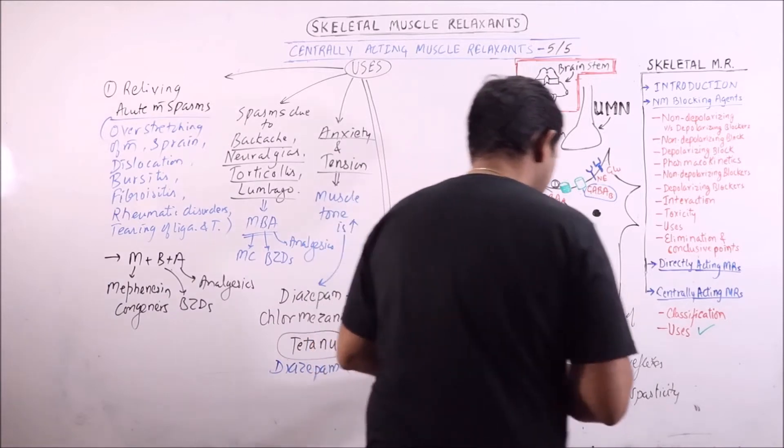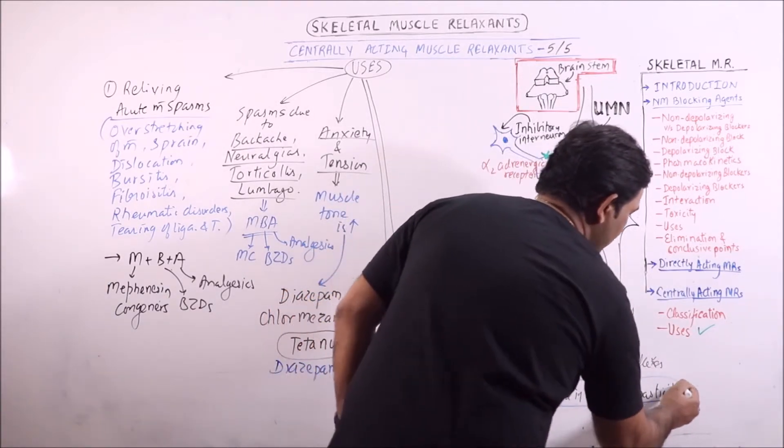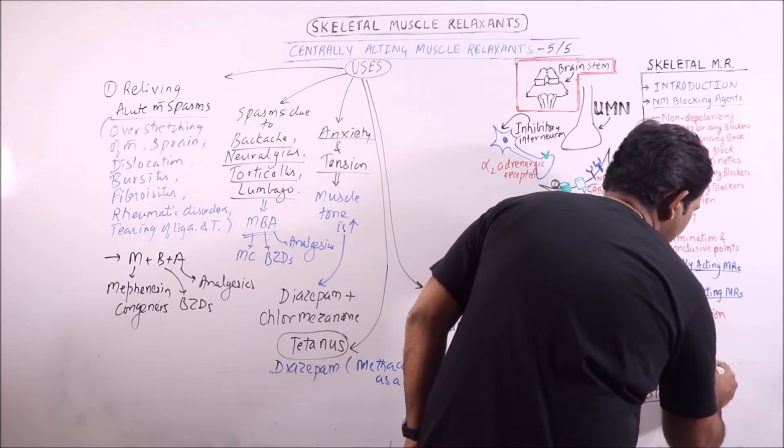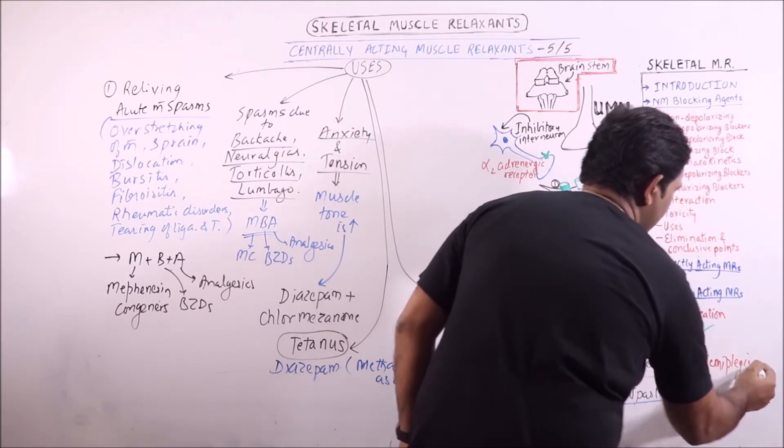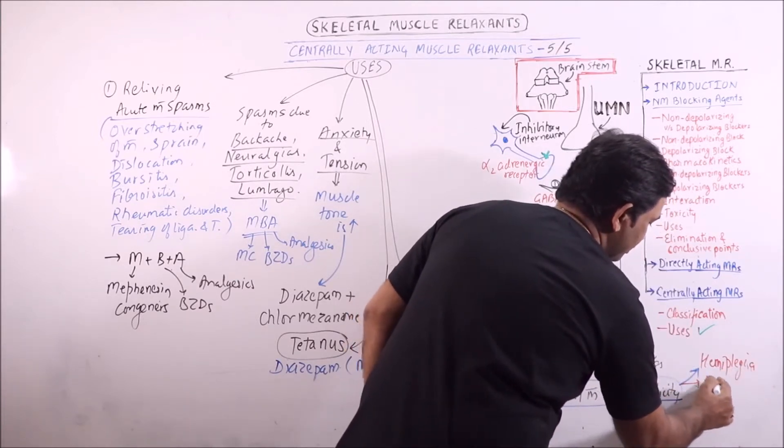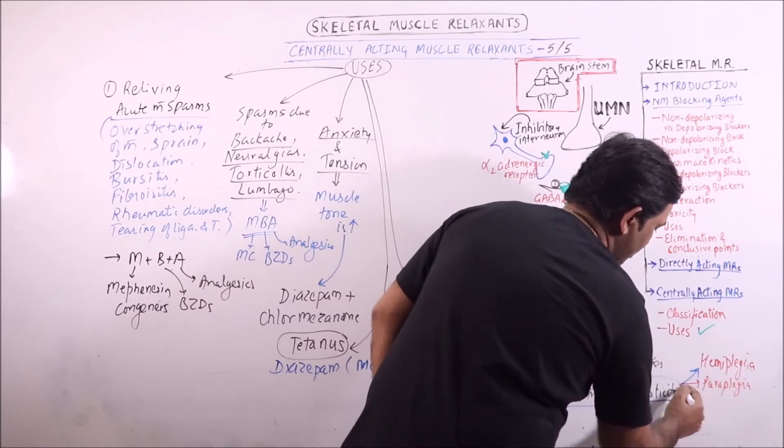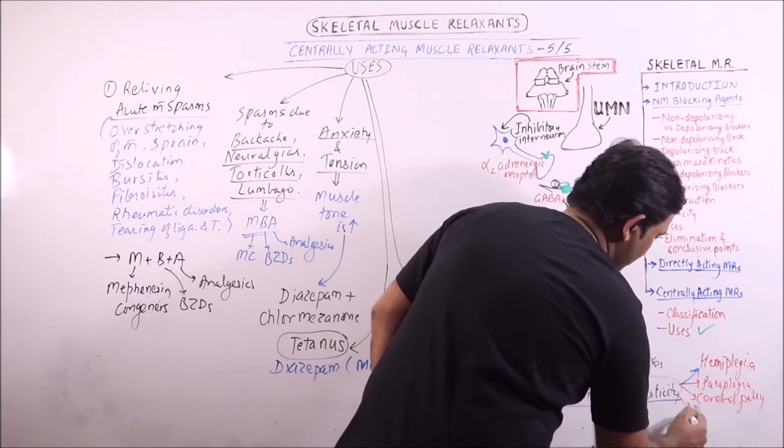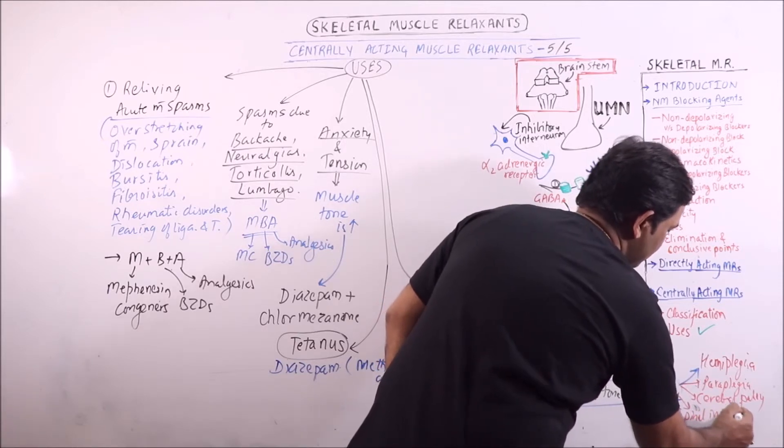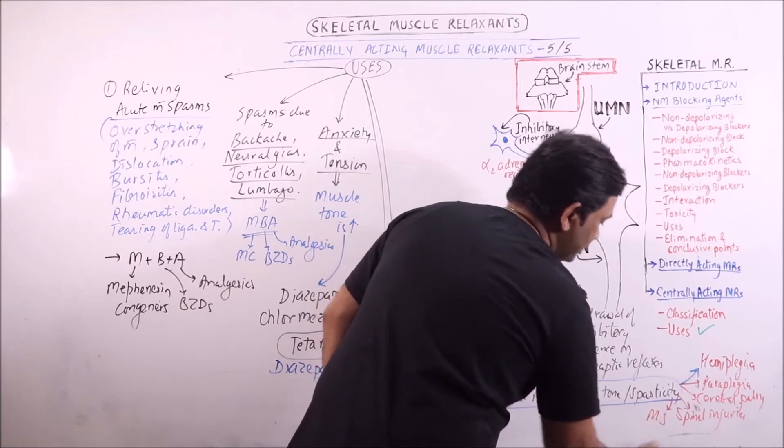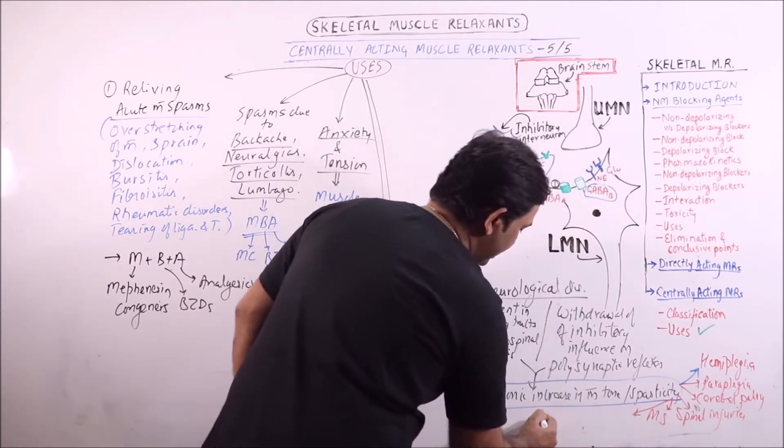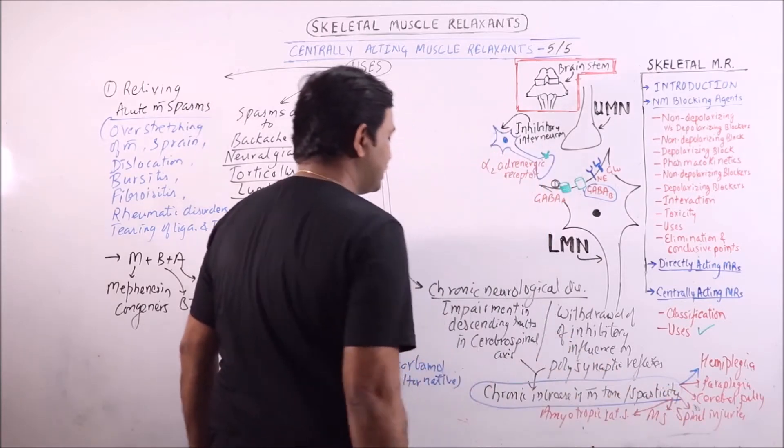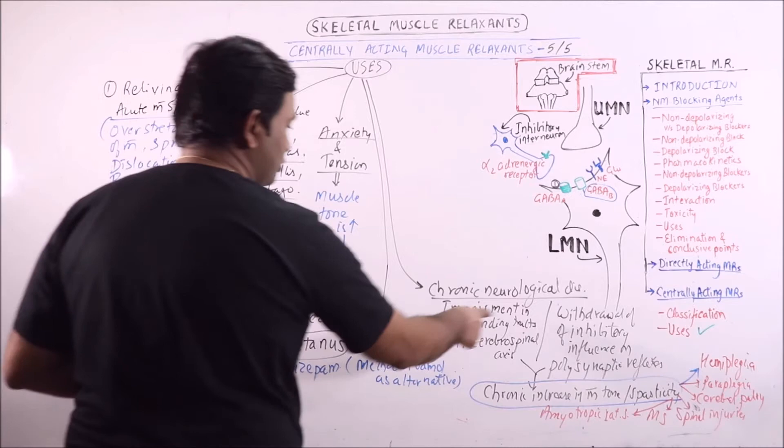Such conditions will lead to hemiplegia, paraplegia, cerebral palsy, spinal injuries, multiple sclerosis, amyotrophic lateral sclerosis. In such conditions increased muscle tone can be observed due to these problems.